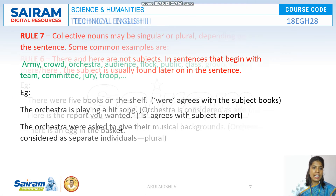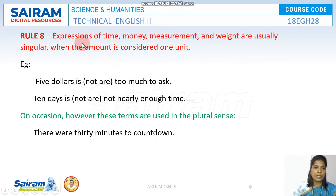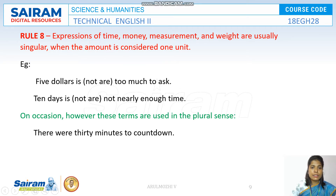We have seen eight rules so far. We are in between the eighth rule. I have told you in the previous slide that expressions of time, money, and measurement and weight should always take a singular verb.